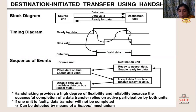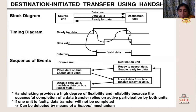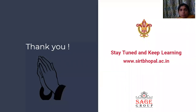Handshaking provides a high degree of flexibility and reliability because the successful completion of data transfer relies on active participation by both units. If one unit is faulty, the data transfer will not be completed, and this can be detected by means of a timeout mechanism. We can say that the handshaking method is more reliable and efficient compared to the strobe control method. Thank you.